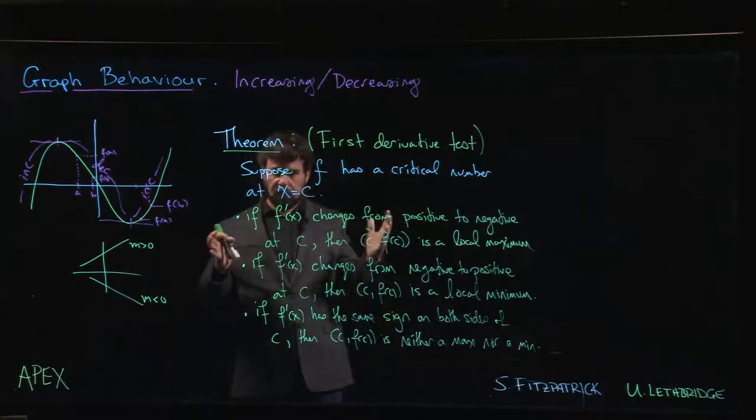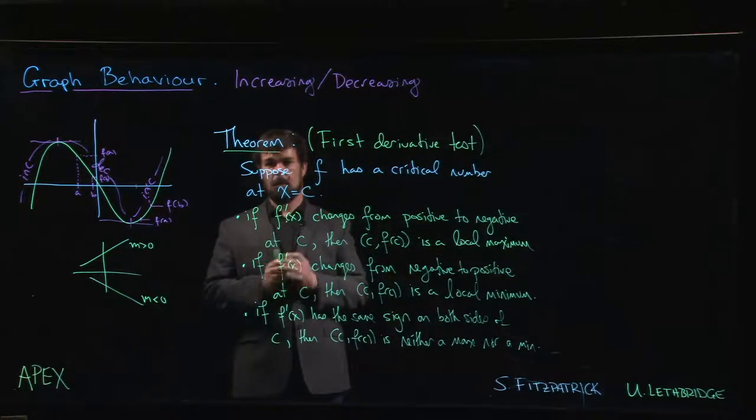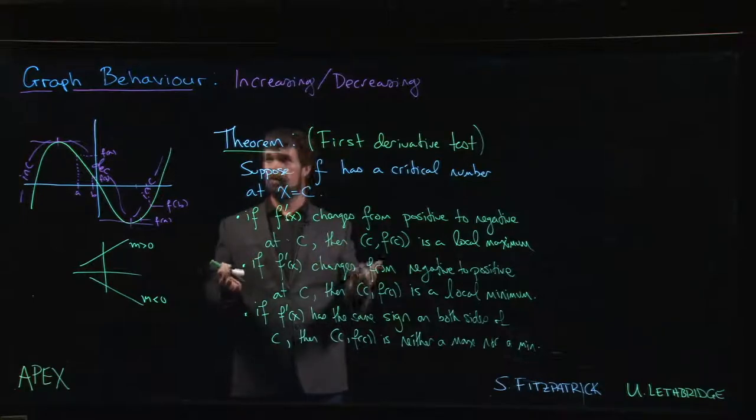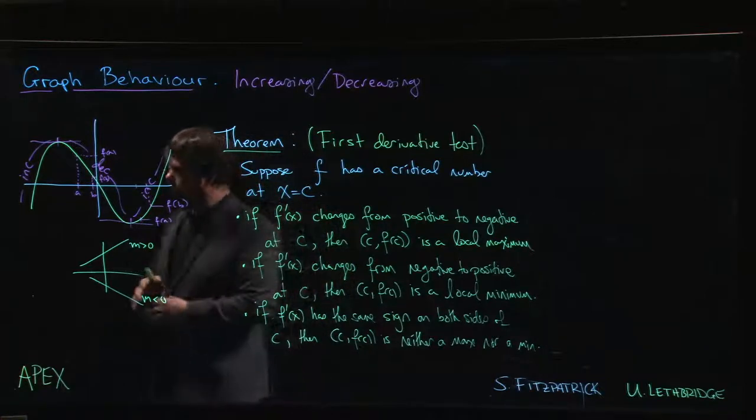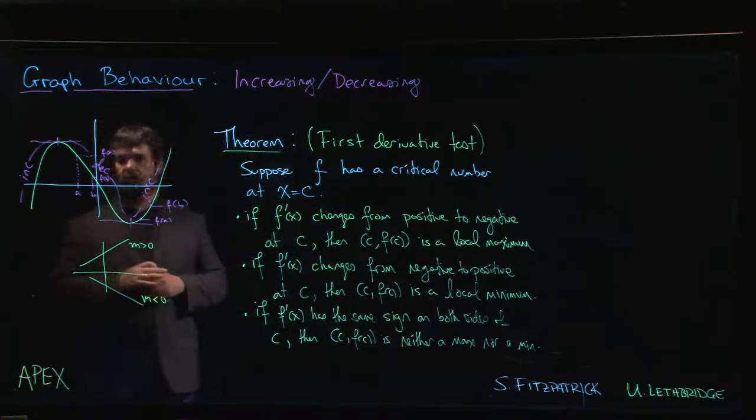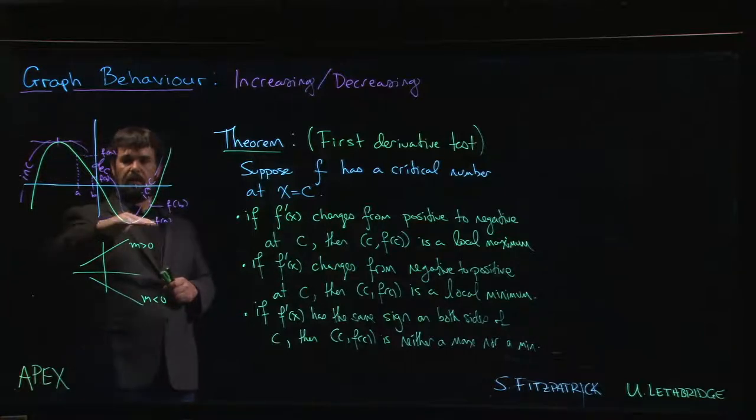Here's our next important result having to do with what the first derivative tells us about the behavior of a graph. We've already hinted at this idea several times - if you look at the places where you have a relative maximum or a relative minimum, they're precisely the places where your graph is transitioning from being increasing to decreasing or vice versa.